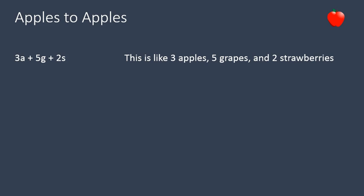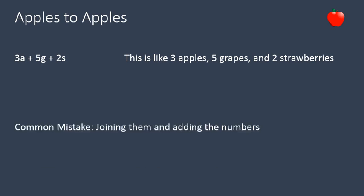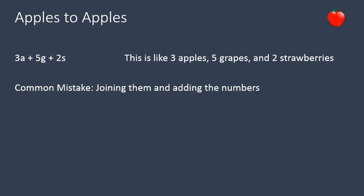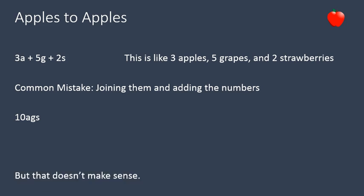A common mistake when people are first learning to do this is that they will just add up the numbers and join together the letters. This is a common mistake, and I'm explaining it because I don't want you to do it. Some people might just join the numbers together and put the letters together, but that doesn't make any sense. We can't say 3 apples plus 5 grapes plus 2 strawberries equals 10 apple-grape-strawberries. So if you think about variables kind of like you would think about fruit or vegetables, it might help.